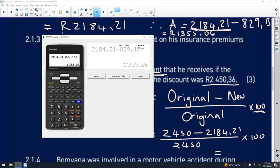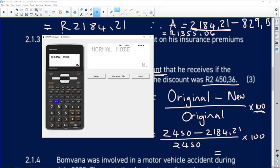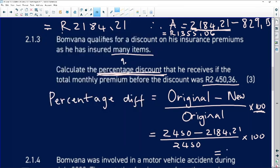R2,450 minus R2,184.21, divided by R2,450, multiplied by 100. The answer is 10.84%, but I'm going to round it to 10.85%. Be careful with your rounding off.